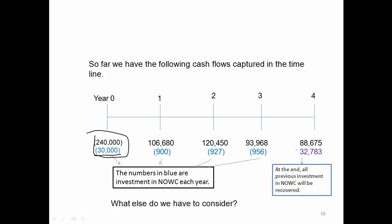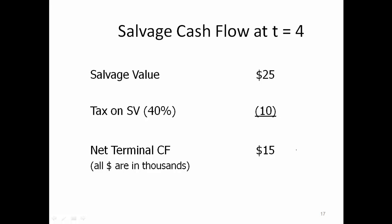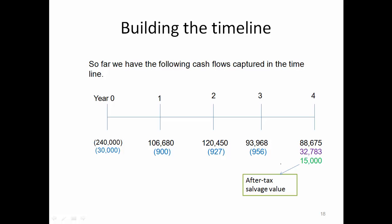Now we have to consider the salvage value — that's when you wrap up the project and sell the equipment at the end of year four. According to the information given, we're supposed to sell the equipment at $25,000. The machine would already be fully depreciated by the end of year four, meaning its book value would be zero. So the IRS will treat this as you making an additional $25,000 out of zero-value equipment — a profit of $25,000 — and tax you at the 40% rate. That means you pay $10,000 in tax, and after tax, you end up with $15,000 additional cash inflow from liquidating the equipment. This $15,000 is the after-tax salvage value.